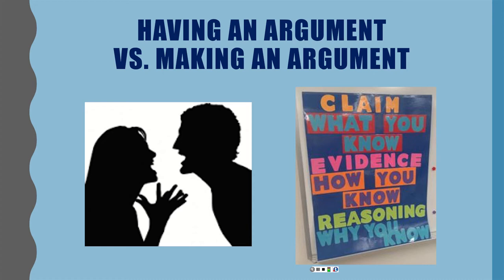When we think about public deliberation, what it often looks like is actually having an argument — a whole bunch of people shouting at each other, name-calling, being bitter and emotional, being sore losers. If we're making an argument, usually it's that claim, evidence, and reasoning triangle — a little bit more logical. Though emotions have their own logic and logic sometimes has its own emotions, despite Aristotle trying to separate out ethos, pathos, and logos.